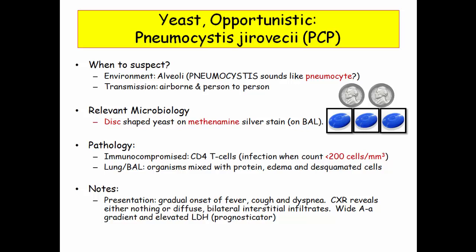It is uncertain where it lives in the environment, so they won't ask. But since it causes predominantly pulmonary disease, it is believed to have airborne transmission. The bottom line is that it resides in the alveoli. The connection between pneumocystis and pneumocytes is a gift — less to memorize.